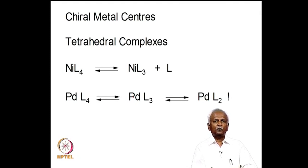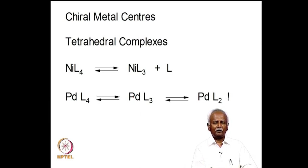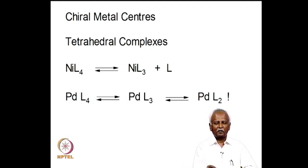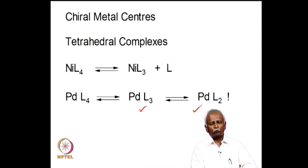Nickel(0), for example, is a tetrahedral complex, and in principle nickel with four different ligands should be a chiral molecule. Unfortunately, these molecules are also sufficiently labile and will lose chirality after dissociation and recombination. Palladium complexes encountered in catalysis are so labile that many do not form the 18-electron complex, tending instead to form three-coordinate or two-coordinate complexes. Making chiral metal complexes turns out to be a daunting task.